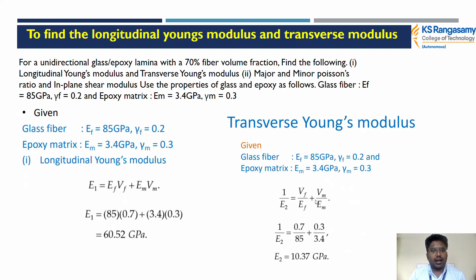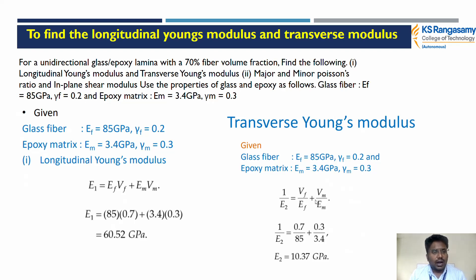A similar problem: find the longitudinal and transverse elastic modulus for a unidirectional glass and epoxy lamina with 70% fiber volume fraction. Find: the longitudinal elastic modulus, the transverse elastic modulus, and the major and minor Poisson ratio. Given: Young's modulus of fiber Ef = 85 GPa, Poisson ratio of fiber νf = 0.2, epoxy matrix Em = 3.4 GPa, and Poisson ratio of matrix νm = 0.3. Note that the matrix Poisson ratio is higher compared to the fiber Poisson ratio.